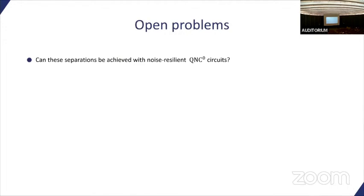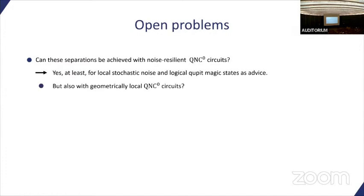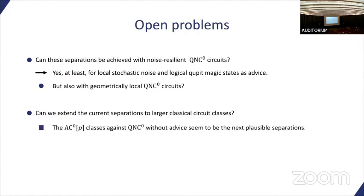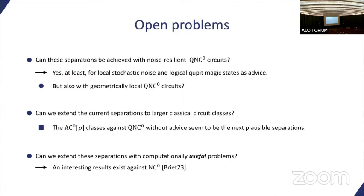As open problems, obviously we could ask, can we make it noise resilient? We have done this in the preprint, but we need all-to-all connectivity in the constant depth quantum circuits. So it's still open if we can do it with geometrically local circuits. We believe it should be possible, but we haven't achieved it yet. Then the obvious question is, can we extend it to a larger circuit class? Obviously TC0 would be interesting, but the classes of AC0P, so AC0 with a mod gate, seems to be a more tangible class to try. And then we have another question: can we extend it to computational problems which are more useful? These were almost tailored to generate the separation, but there was an interesting result between QNC0 and NC0 for the coding problem. So now we are questioning if we can do some interesting separation for something which will be practically useful. Some classical parallel computation, but you can do it more efficiently on constant depth and parallel quantum devices.